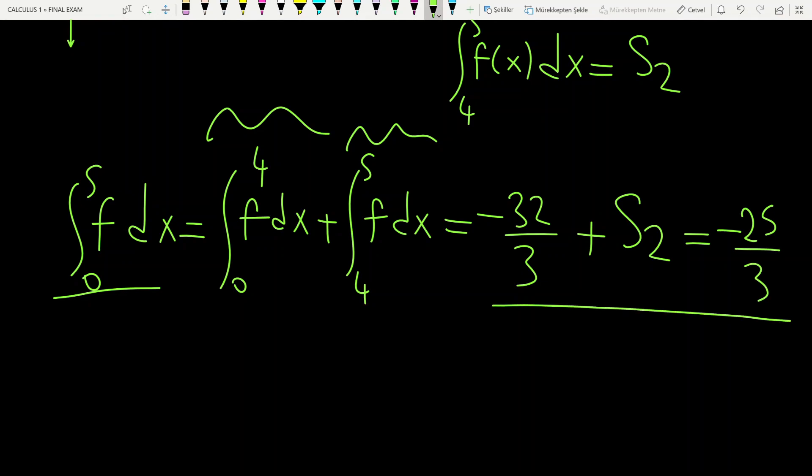By a simple calculation, you can find the S2 area. S2 equals (32 - 25)/3, which equals 7/3. This is done.